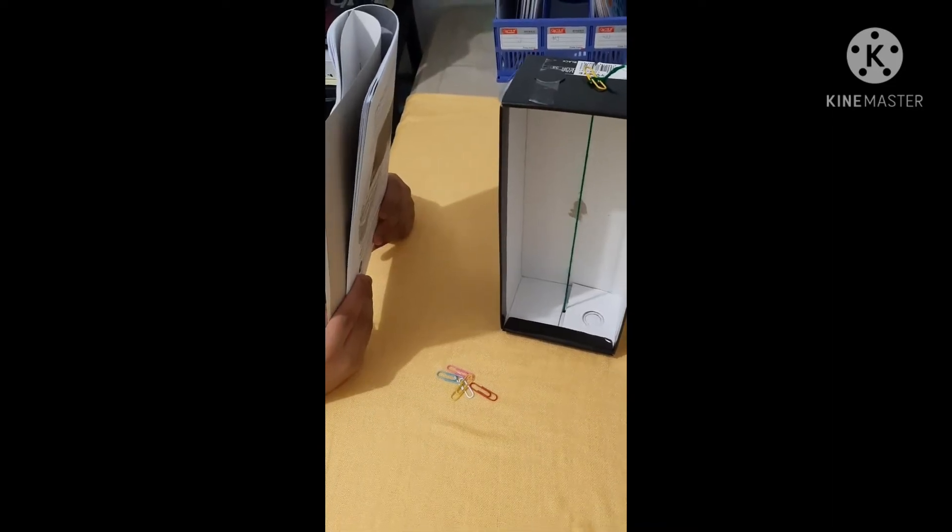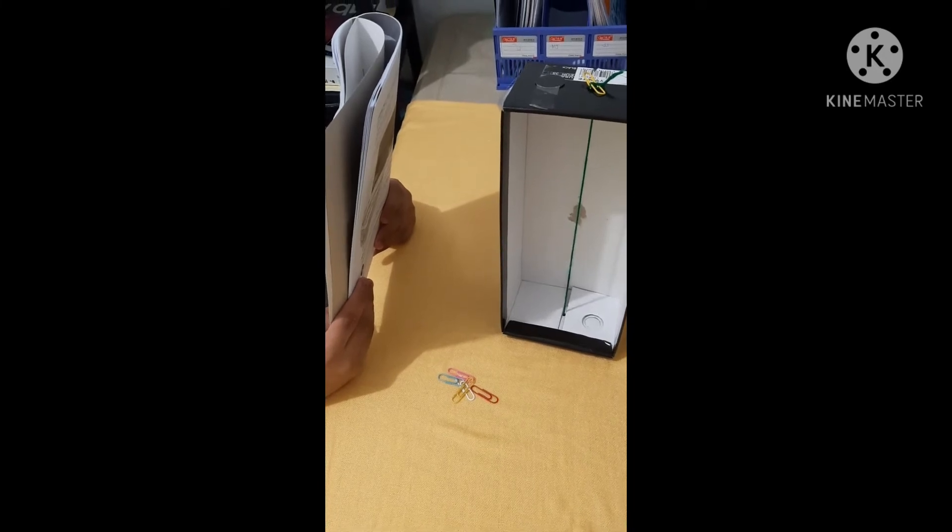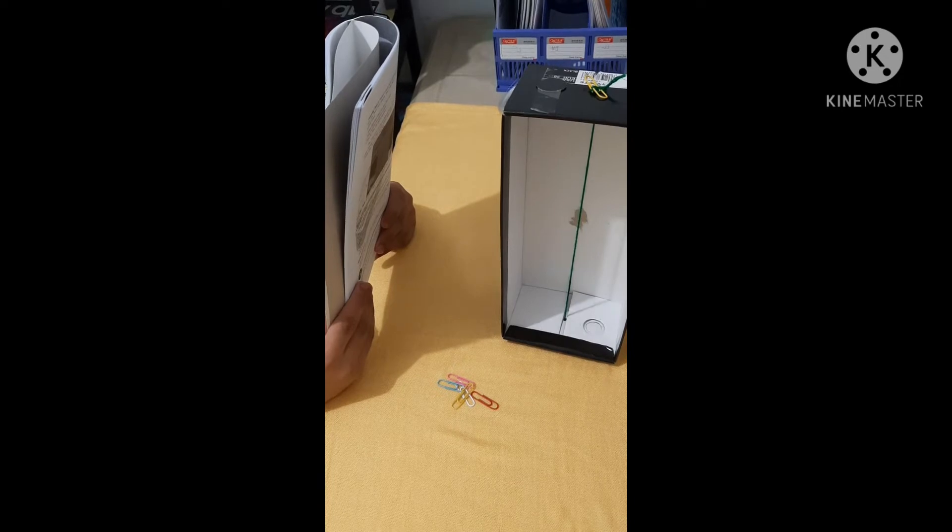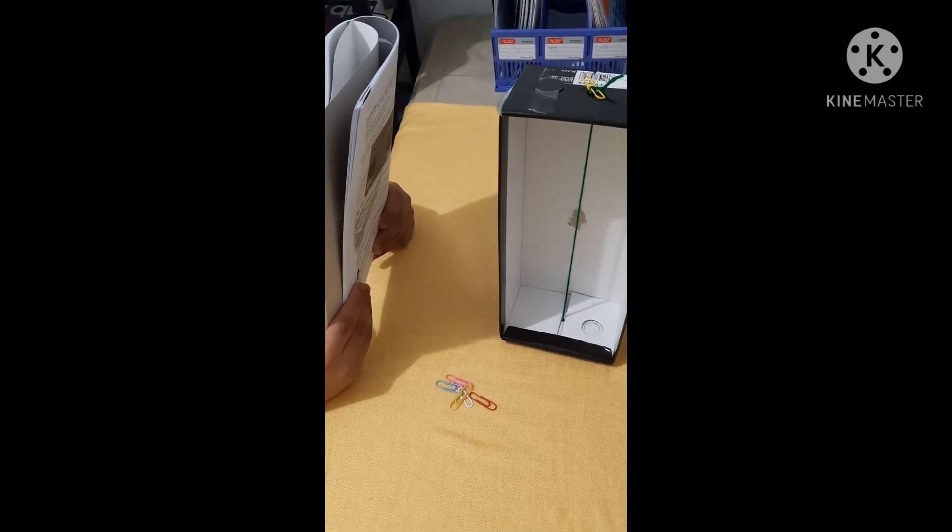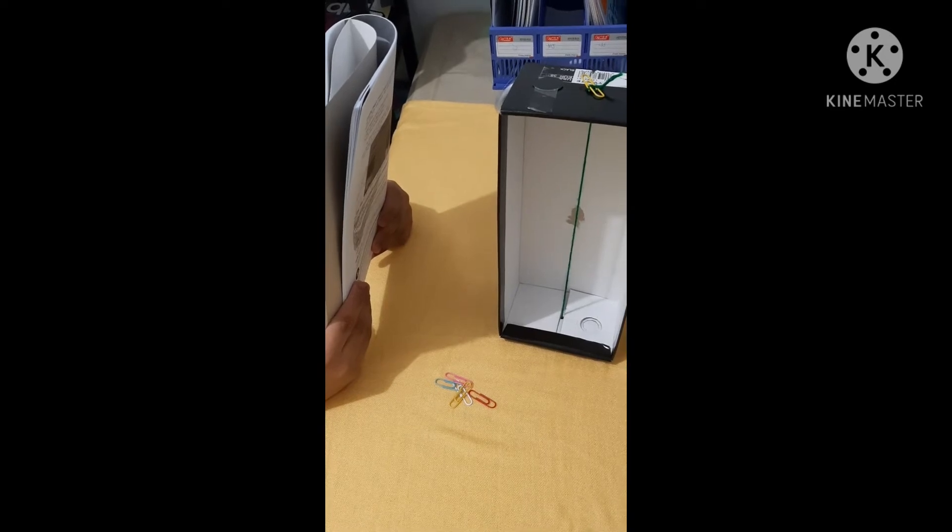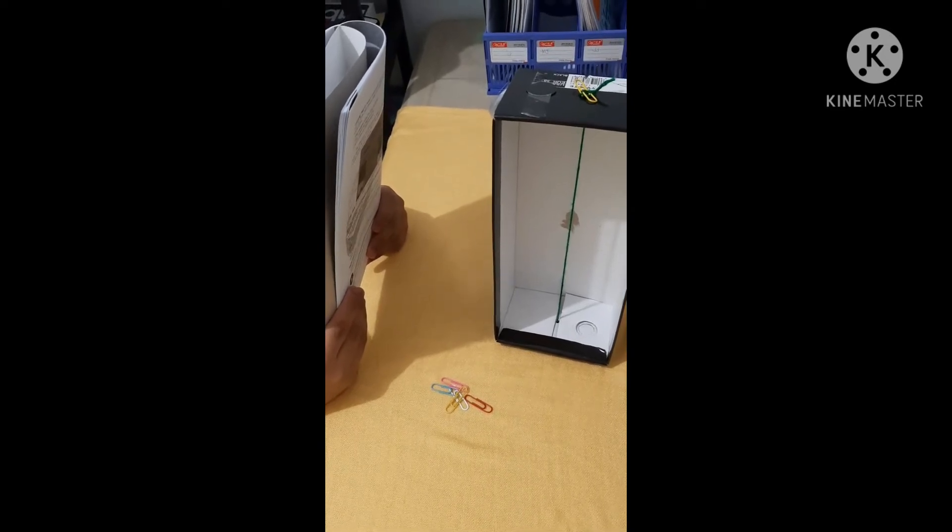Start by tying a string to a paperclip on the outside of the box to the top. Thread the string through the bottom of the box and tie the string to a paperclip on the bottom of the box. Place four or five paperclips on the string inside of the box.